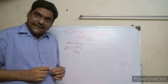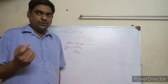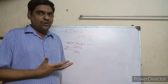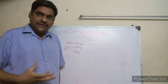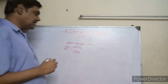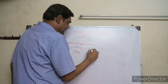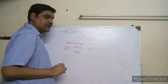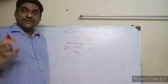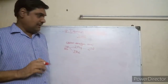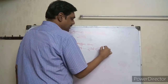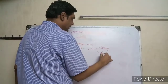IPv4 is a 32-bit address system — it uses 32 bits, and that is why it is called a 32-bit address system. Using this, you can form 2 to the power of 32 addresses. The address can be represented in binary notation or decimal notation.